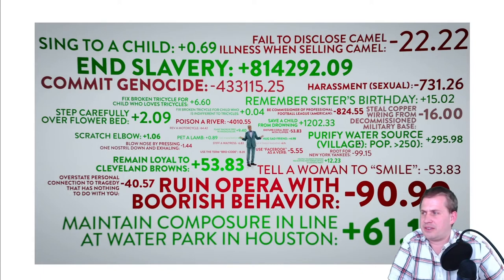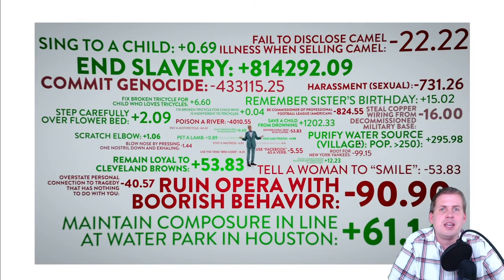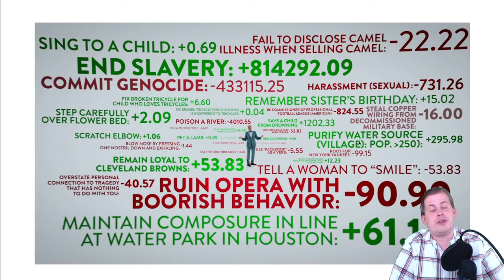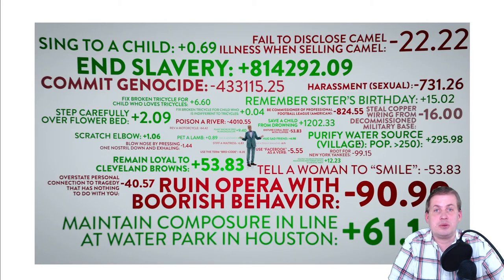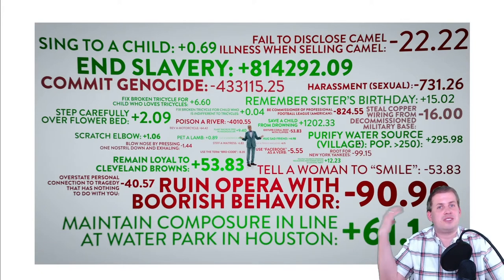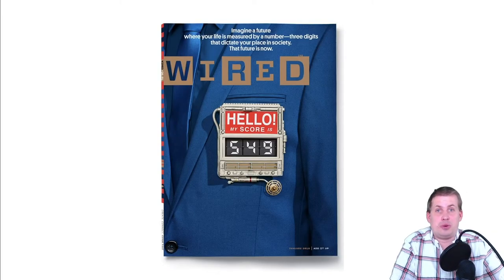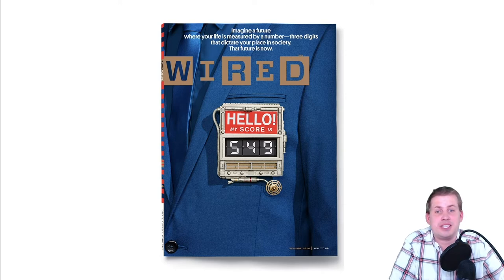You can see different reasons for getting points — end slavery gets you 814,000 points, tell a woman to smile loses you 53 points, and so on. The whole show is focused on this point system and the ethics of living your life to collect points. One of the main plot points is that nobody on earth knows about this point system, because if you did it would distort your behavior — you're supposed to be good because it's the right thing to do, not to earn specific points.